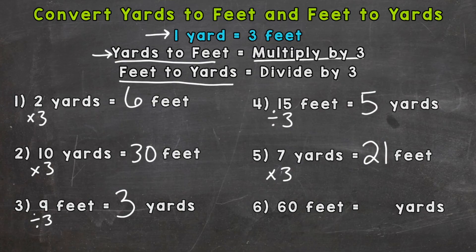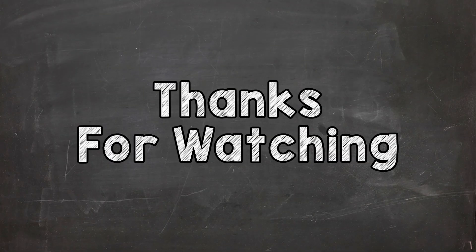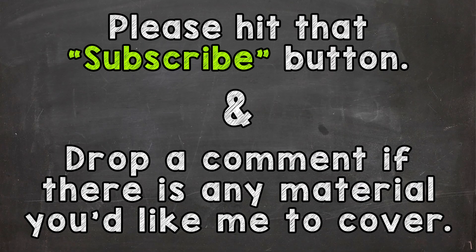And lastly, number six: sixty feet equals how many yards? We're splitting that sixty feet into groups of three feet each. Sixty divided by three gives us twenty yards. So there you have it — that's how to convert yards to feet and feet to yards. Hopefully that was helpful. Thanks so much for watching. Until next time. Peace.